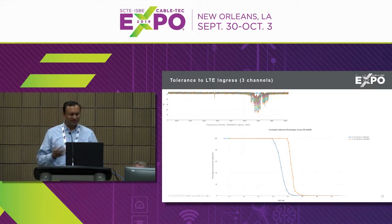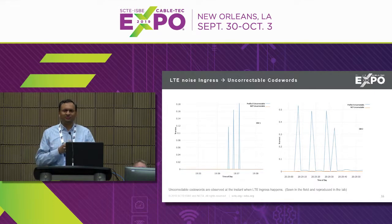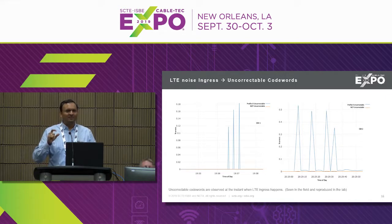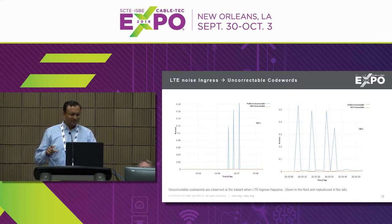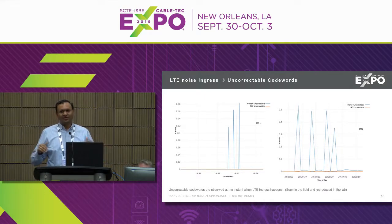We did testing with one and three LTE channels, seeing similar S-curve behaviors. The main takeaway with LTE ingress is that the ingress varies over time — it almost acts like an impulse into the plant. At the moment of an LTE noise impulse, the modem can't decode codewords and there's a set of codeword errors. But after 10-20 milliseconds those errors go away, LDPC takes over, and life is good again. There is definitely an impact from that initial impulse noise.